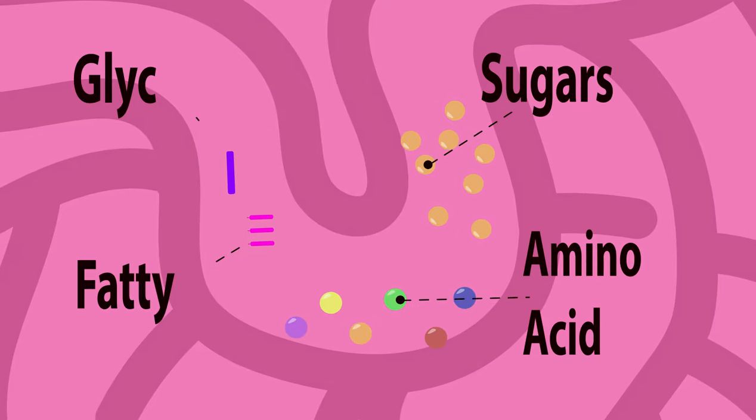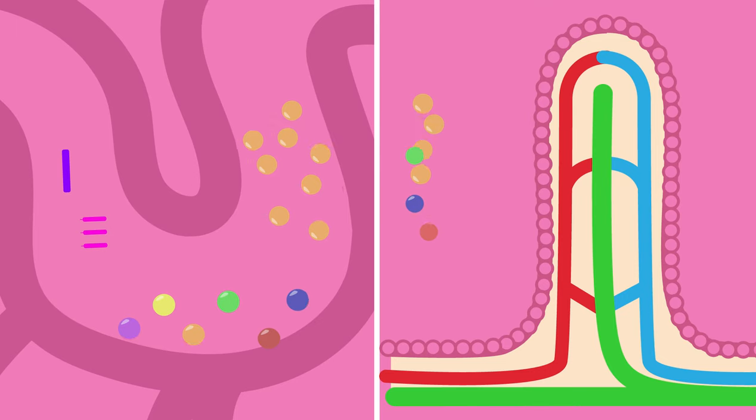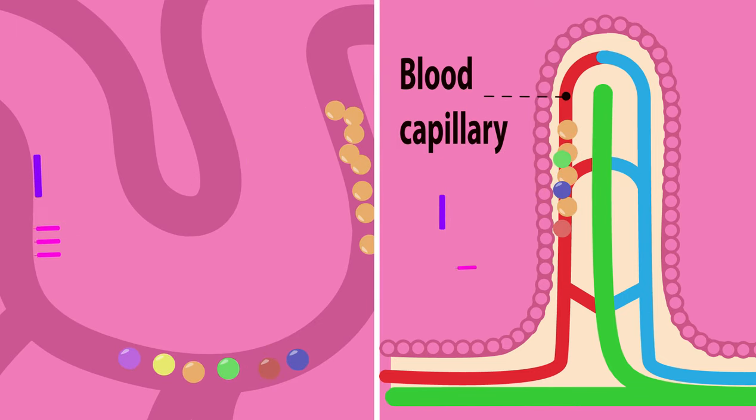But sugars, amino acids, fatty acids, and glycerol are all small enough to pass through. Sugars and amino acids pass through the holes into the blood capillary, while fatty acids and glycerol pass into the lacteal of the villi.